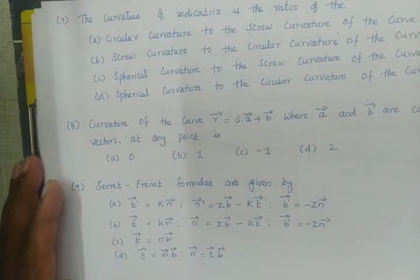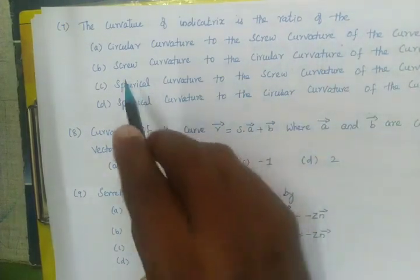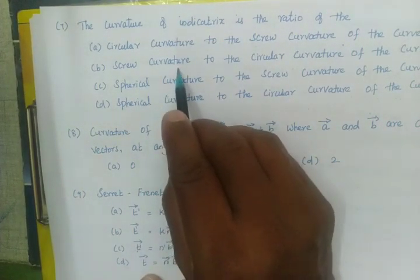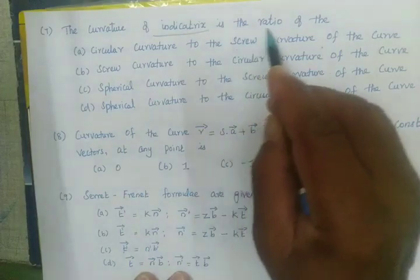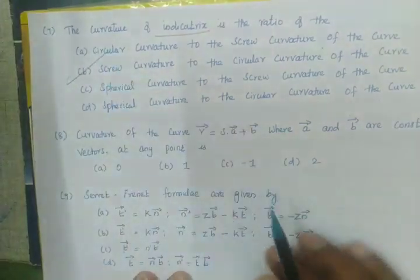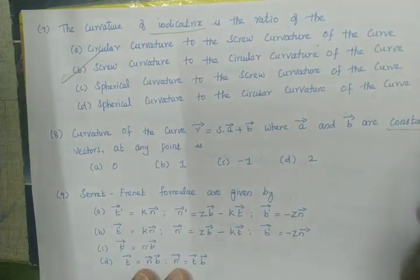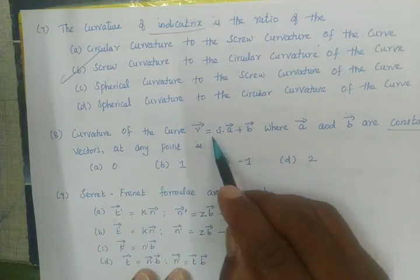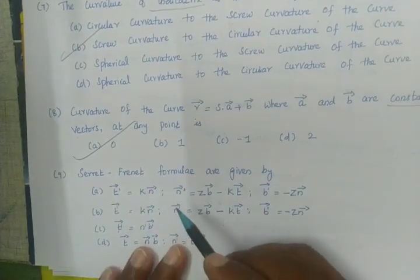The curvature of the indicatrix is the ratio of the true curvature to the circular curvature of the curve. The curvature vector equals s-dot times a vector plus b vector, where a and b are constant vectors at any point. The value of the curvature vector equals zero.